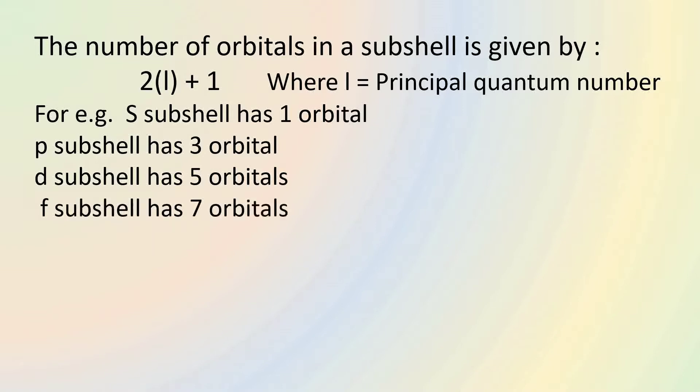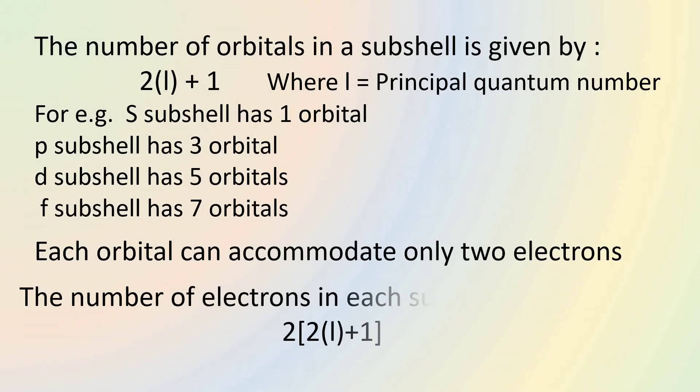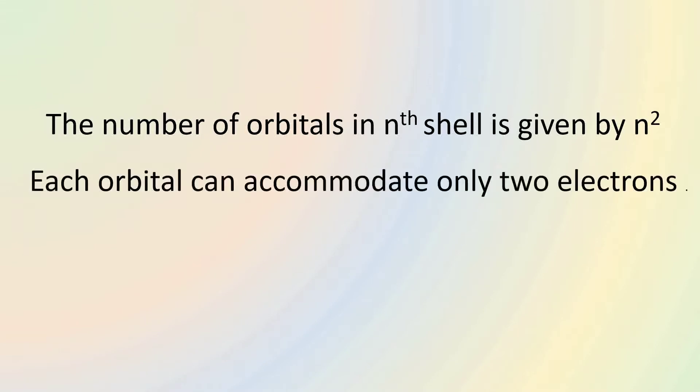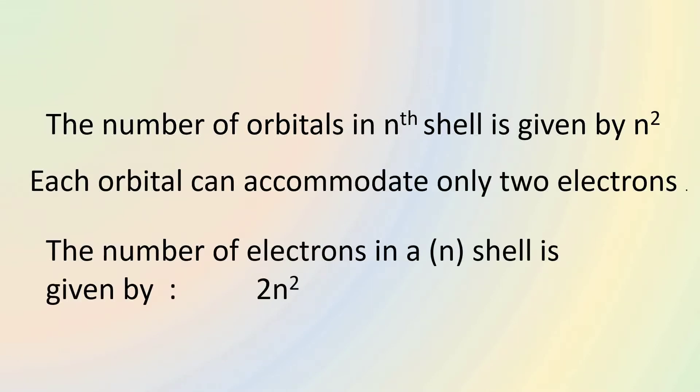Each orbital can accommodate only 2 electrons. So the number of electrons in each subshell is given by 2(2L plus 1). Similarly, the number of orbitals in N shell is given by N square and the number of electrons in M shell is given by 2N square.